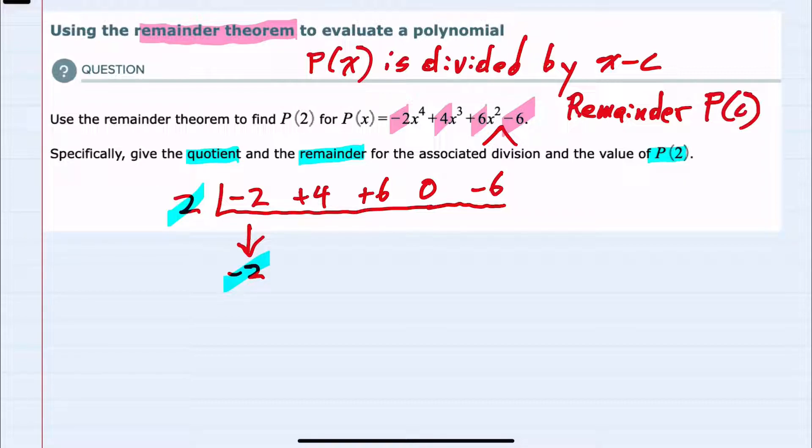Multiplying 2 times negative 2 gives us a negative 4. Adding 4 and negative 4 would be 0. Multiplying again, 2 times 0 would be 0. 6 plus 0 would give me a 6. Multiplying again, 2 times 6 is 12. Adding 0 and 12.